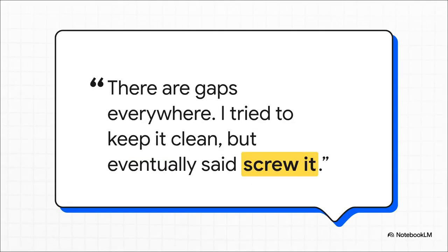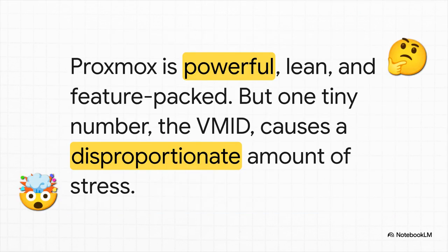It's that universal moment of surrender for every Proxmox admin who's tried and failed to keep their VM list looking pristine. And that's really the heart of the issue. Proxmox is genuinely fantastic — you get clustering, live migrations, snapshots, the whole shebang. It just feels right for a home lab or even a small enterprise. But then you have this one little number, the VMID, that feels like a ghost from a much simpler time, constantly creating this low-level organizational anxiety.